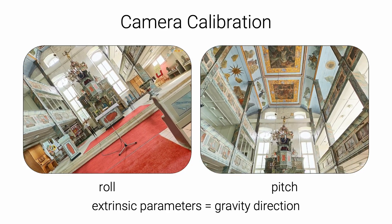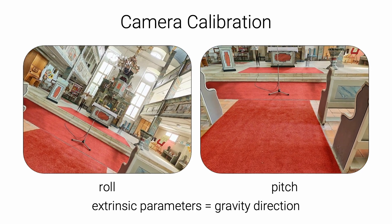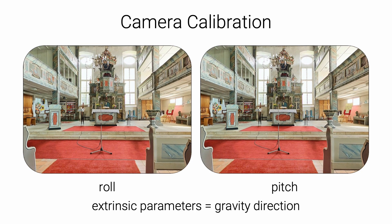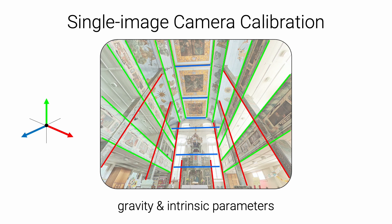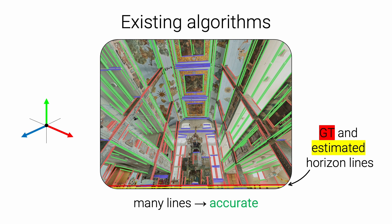More generally, camera calibration can also include extrinsic parameters like the gravity direction, which defines a canonical orientation with 2 degrees of freedom. We can actually estimate the camera calibration from a single image using visual cues such as straight lines, curves, and vanishing points. Existing algorithms for single image calibration are based on line detectors, geometric solvers, and classical optimization. They are very accurate, but limited to man-made environments in which dominant orthogonal directions are visible, which include indoor and urban spaces.